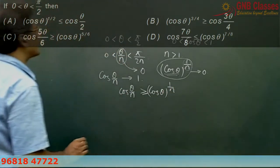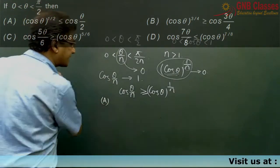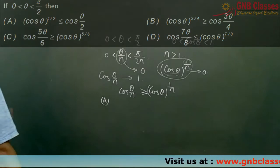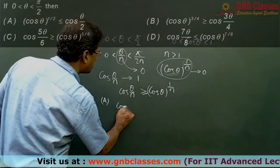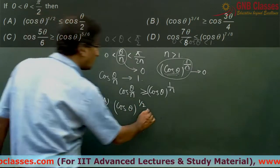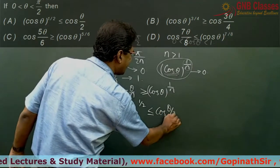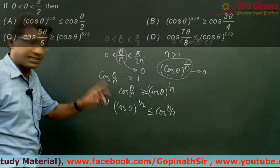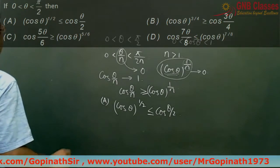Now from the options that has been given to us, you observe it carefully. Your option A is correct. Because they have given us that cos theta whole to the power half is less than equals to cos theta by 2. So option A is correct. At the same time you see your option C is correct.